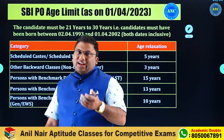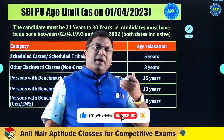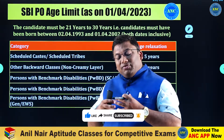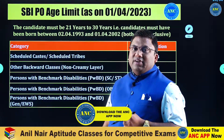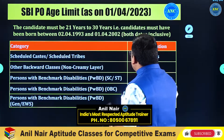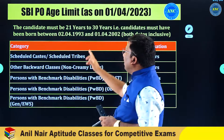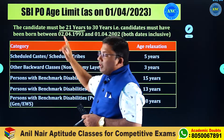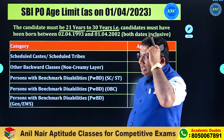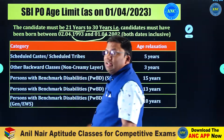Is there any age relaxation? In any banking-related examination that happens nationwide, there is an extra cushion given to certain category students. Scheduled Caste and Scheduled Tribe candidates get an age relaxation of five years. If you are from the general category, you should be within the age limit of 21 to 30 years — that means you must have been born between those corresponding years.